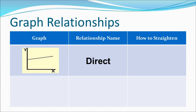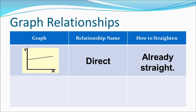As x goes up, y goes up at a constant rate. In order to derive equations from the data that we've graphed, we need to linearize the graph. Linearizing means straightening out the graph into a nice straight line, giving us a slope-intercept-form equation. This is accomplished by altering or manipulating the x or the y variables. In this case, since it's already a straight line, we straighten it by doing nothing — we can directly derive the equation from this graph.